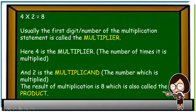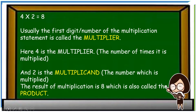Usually the first number of the multiplication statement is called the multiplier. Here, four is the multiplier — it is the number of times the multiplicand is multiplied. And two is the multiplicand — the number which is multiplied.